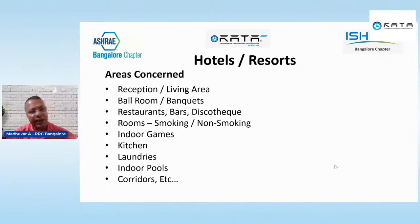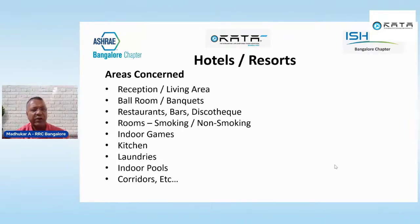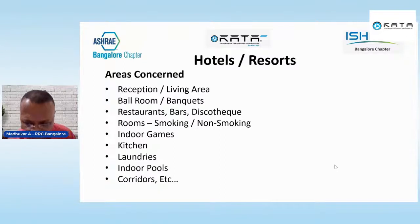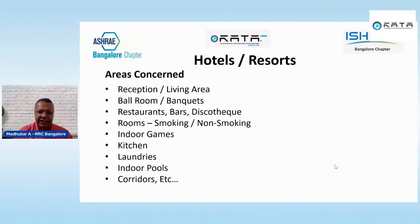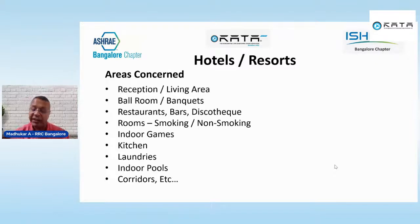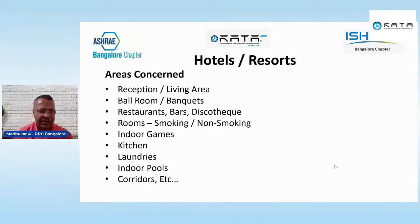For smoking rooms, a good exhaust and fresh air supply ventilation system is essential. Indoor games areas need sufficient air changes to remove sweat smells. Kitchens require ventilation to remove bad smells and hot air. Laundries need ventilation to remove chemical cleaning smells. Indoor swimming pools need good ventilation. Corridors and passage areas also need proper ventilation. All these areas require adequate air changes to maintain good indoor air quality.